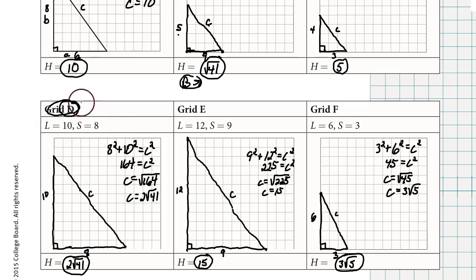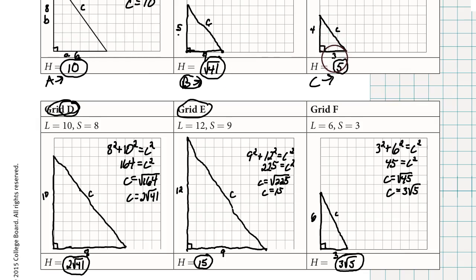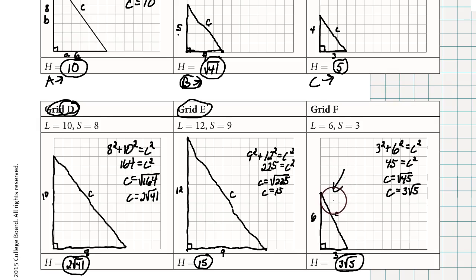The group of 3 similar triangles includes grids A, C, and E. Notice that these numbers are all multiples of what's in grid C. The 3, 4, 5 triangle in grid C, when multiplied by 2, gives the 6, 8, 10 triangle in grid A. Multiplying 3, 4, 5 by 3 gives 9, 12, and 15 for grid E. Grid F does not have another triangle in this set of 6 that is similar to it. So grid B is similar to grid D, and grids A, C, and E are similar.